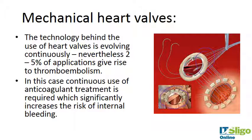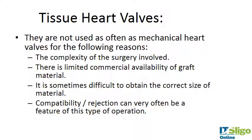With mechanical heart valves, anticoagulant treatment is required, which significantly increases the risk of internal bleeding — that's one of the main drawbacks. Tissue heart valves are the other type; they're not used as often as mechanical heart valves. The surgery is more complex, there is limited commercial availability of graft material from animal sources, and it can be difficult to obtain the correct size. Compatibility and rejection can also be issues.